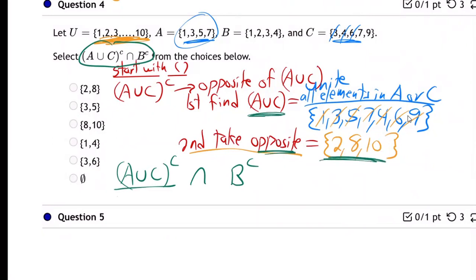So we've got A union C complement. That's right here, right? We found A union C, and then we took the opposite. So that's our two, eight, and ten. Overlap.